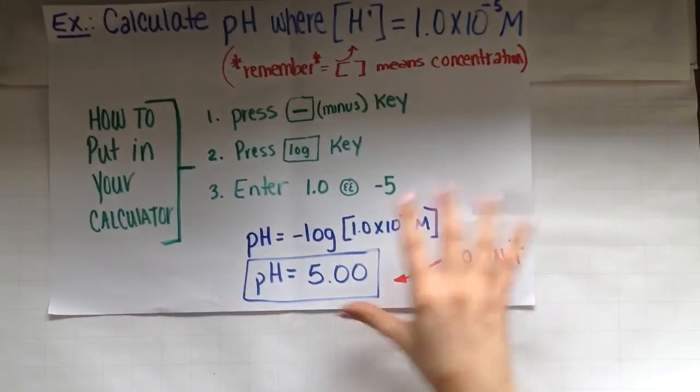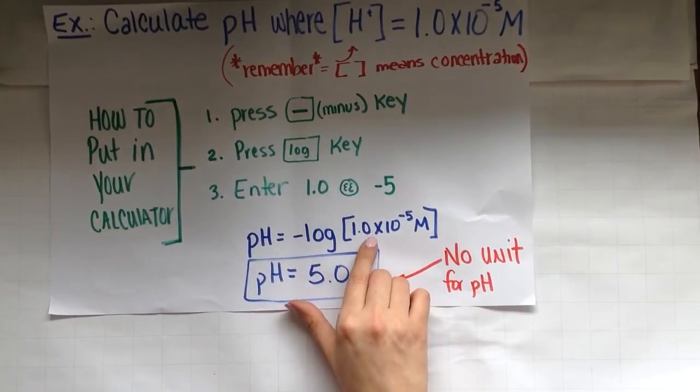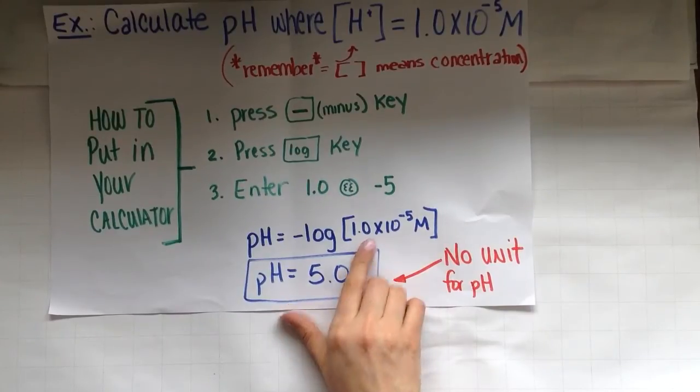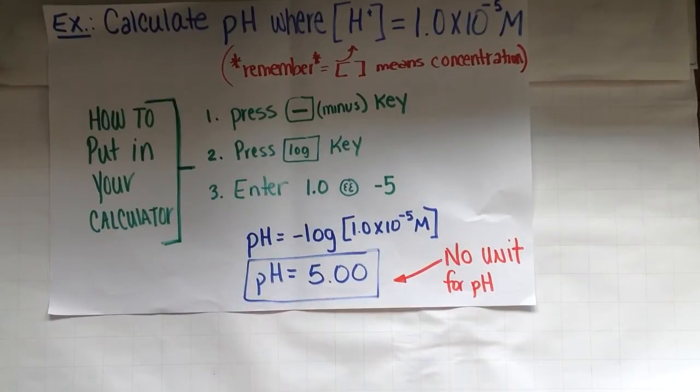So in the end, pH is equal to negative log of this number here. That's how you put your calculator. And you should get 5.00 as an answer. Check now to make sure you put this in correctly.